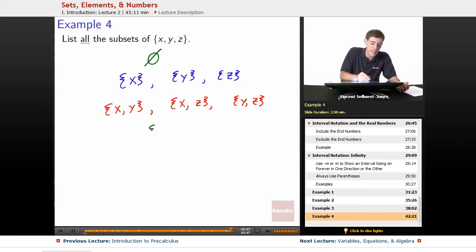And then finally, we've got x, y, z itself is a subset of itself. Because remember, by the formal definition of being a subset, it just means that all of the elements inside of your set show up in the other set. And every element x, y, z shows up inside of x, y, z. Makes sense. So every set is a subset of itself.